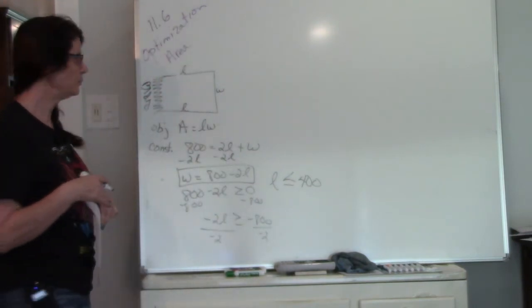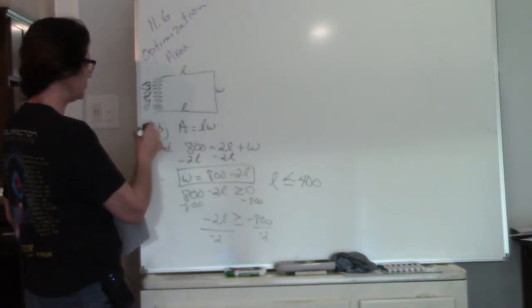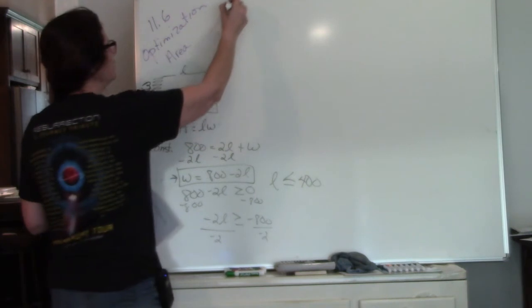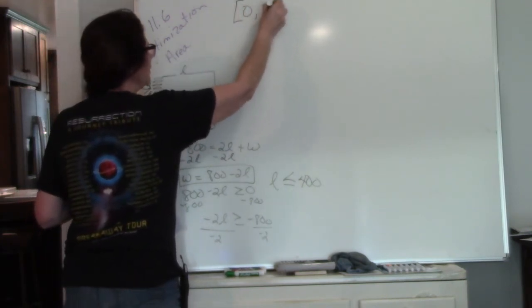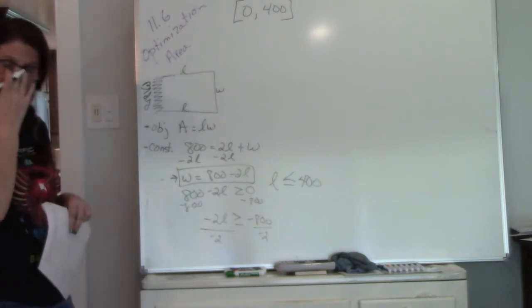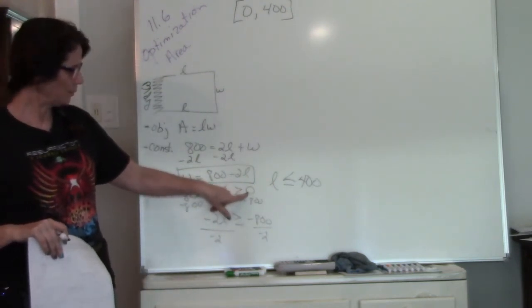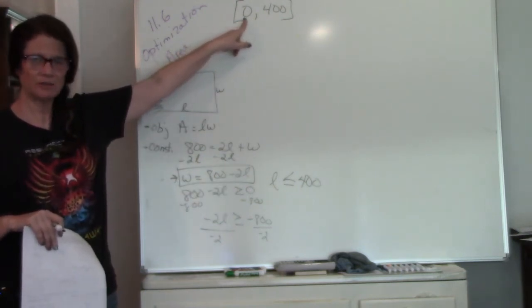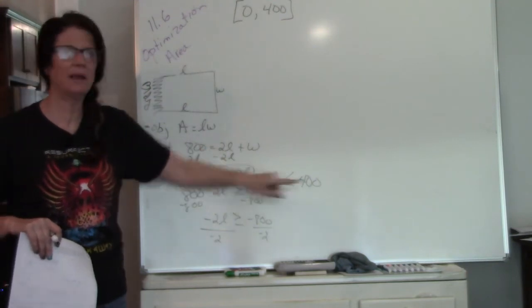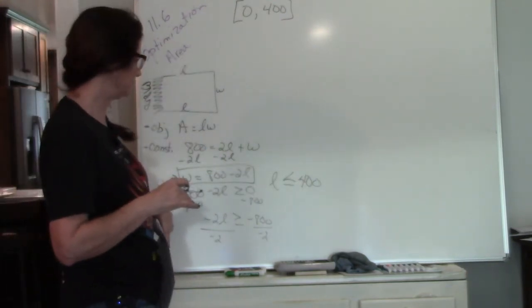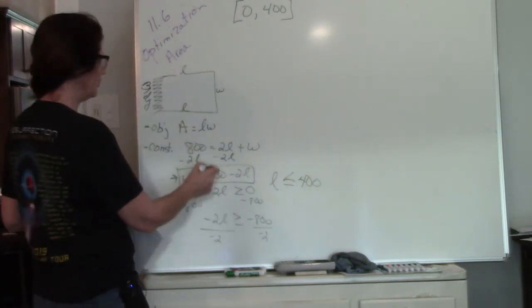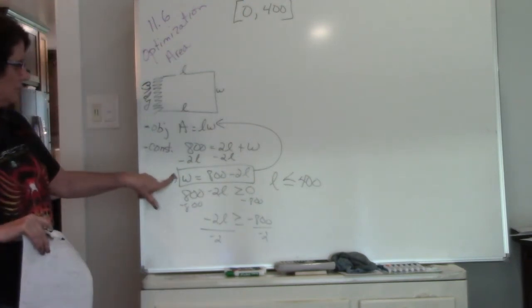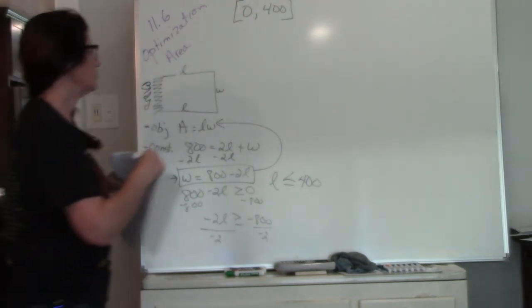So now I have my endpoints. Here's my objective, here's my constraint. My endpoints are between 0 and 400. Where did I get the 0? Well, because we're only dealing in positive numbers, I can't have anything less than 0. So it goes from 0 to 400. This is the other side of my domain.